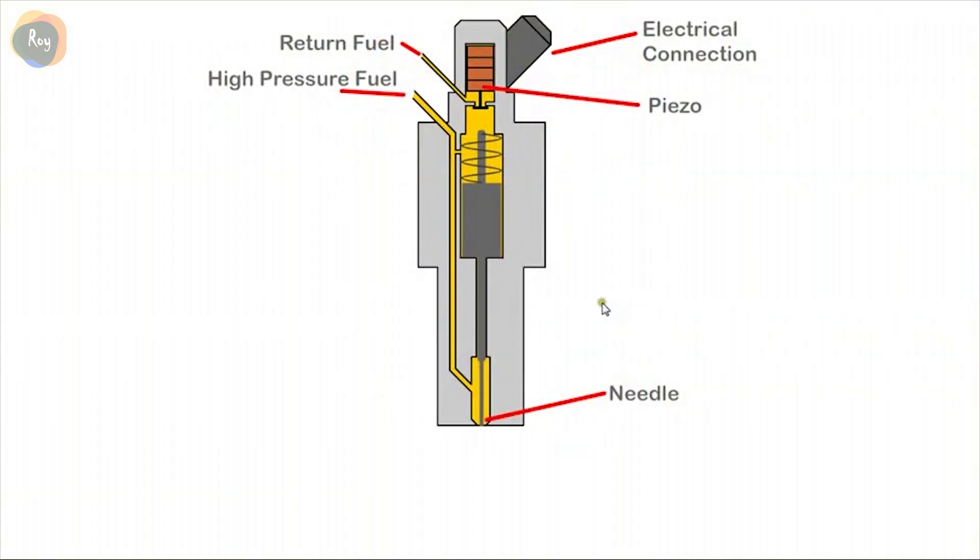Here we show the operation of a fuel injector. Fuel enters through this pipe and some flows into the small chamber above the needle through a small orifice. This high pressure fuel keeps the injector closed. When the ECU, electronic control unit, energizes the piezo crystal, it expands and the valve moves down releasing the pressure fuel in the top chamber. The high pressure fuel moves the needle up and the fuel is injected. When the crystal is de-energized, the valve closes and high pressure diesel closes the injector.